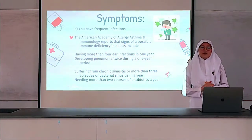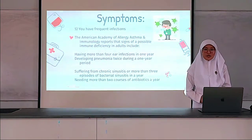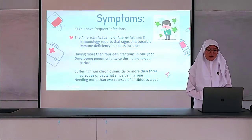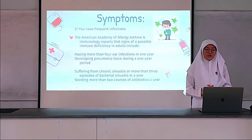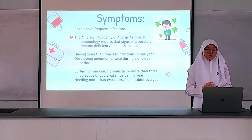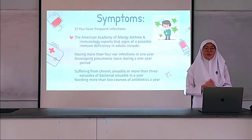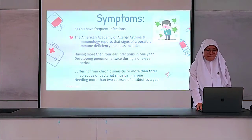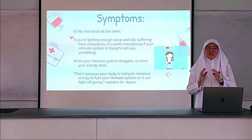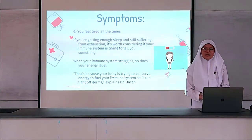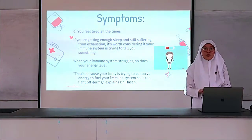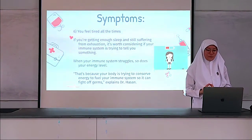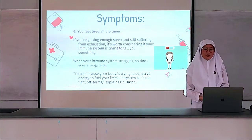Five, you have frequent infections. The American Academy of Allergy and Asthma Immunology reports that signs of possible immune deficiency in adults include having more than four ear infections per year, developing pneumonia twice in a one-year period, suffering from chronic sinusitis with more than three episodes of bacterial sinusitis per year, and needing more than two courses of antibiotics a year. Six, you feel tired at all times — even if you get enough sleep but still feel exhausted, it is worth considering if you have a weak immune system.